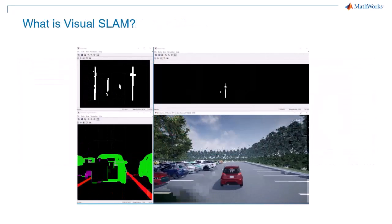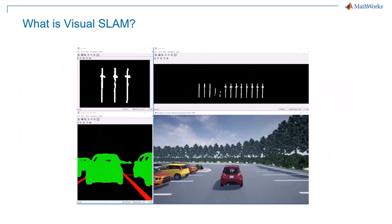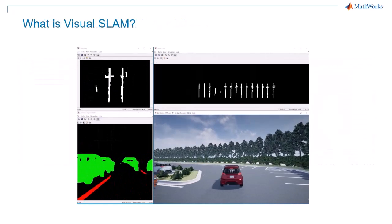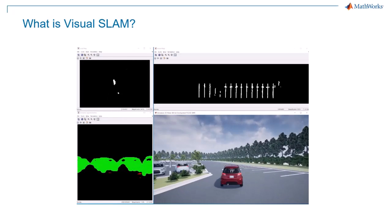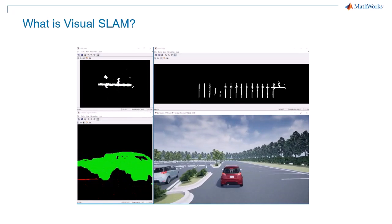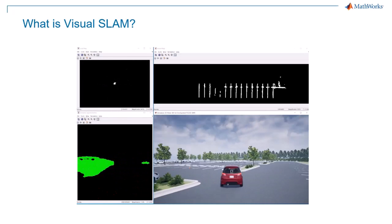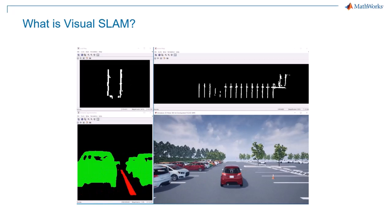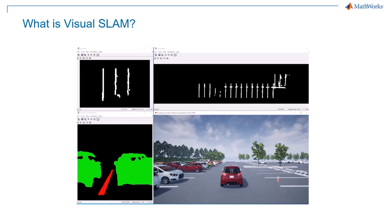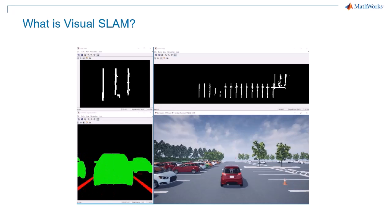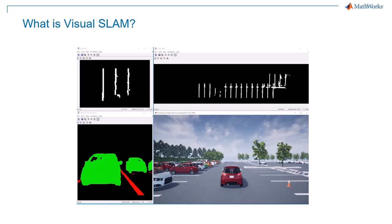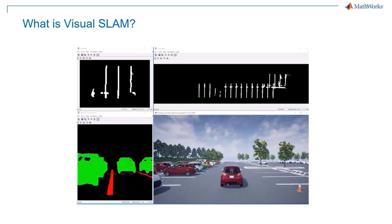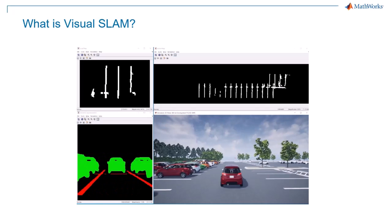Visual Simultaneous Localization and Mapping, commonly abbreviated as Visual SLAM, is a technological process that enables a robot, drone, or other autonomous system to construct a map of an unknown environment while simultaneously tracking its own location within that space.